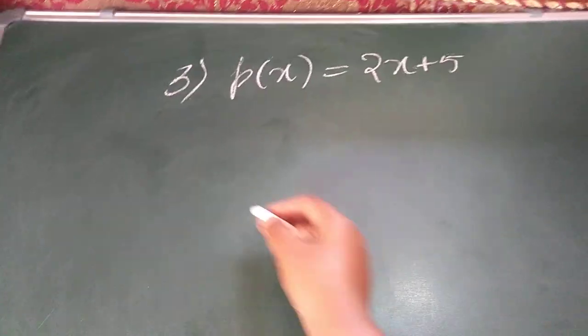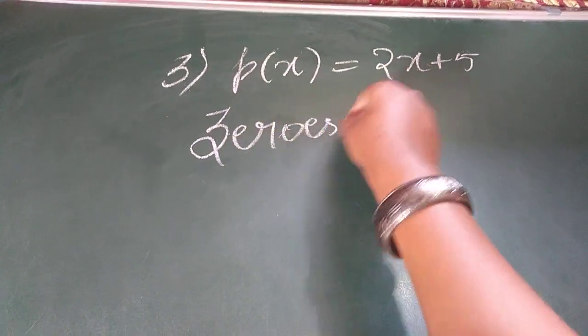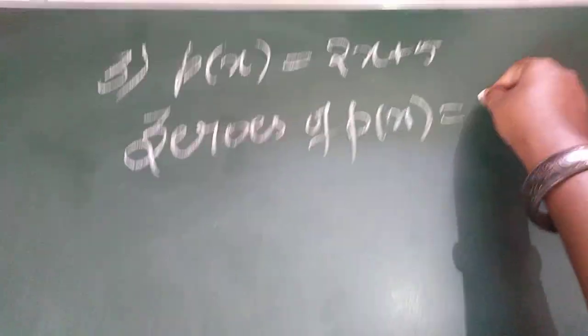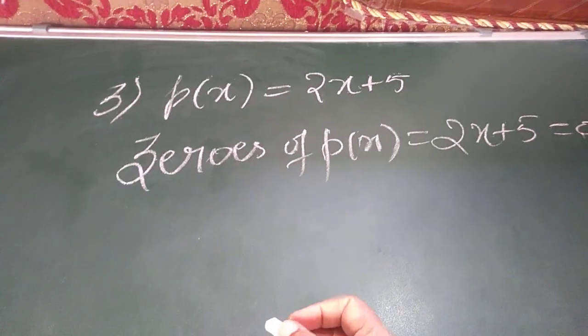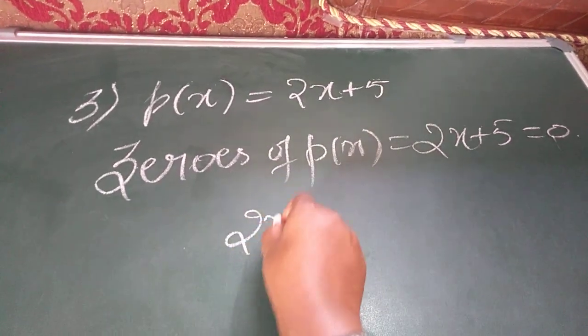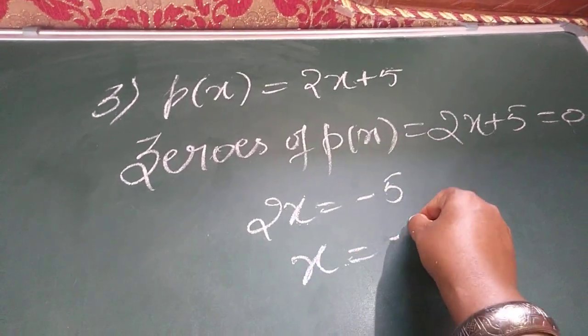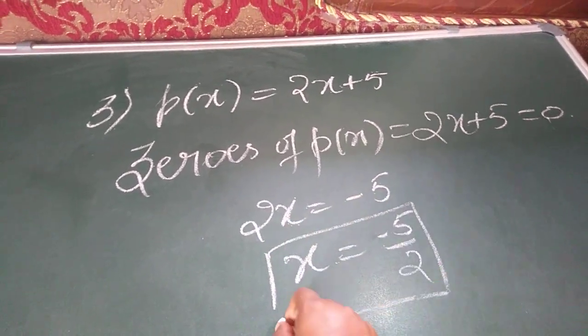First one, write zeros of P(x) and equate 2x plus 5 equal to 0. When you take plus 5 to the other side, it will become minus 5. X equal to minus 5 by 2. This is the solution.